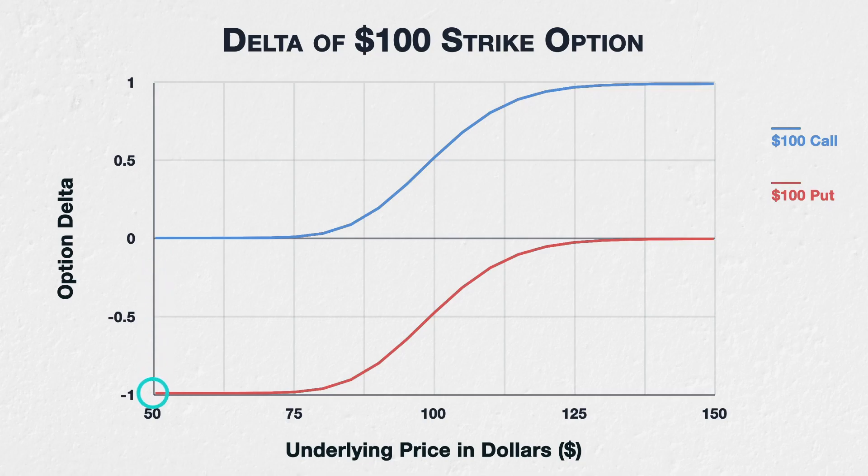Remaining at a $50 underlying price, the put option with a strike price of $100 will have a delta very close to minus 1. The $100 put is deep in the money and will behave very similarly to a short position in the underlying. A short position in the underlying, of course, will have a delta of negative 1, losing $1 for every $1 increase in price.